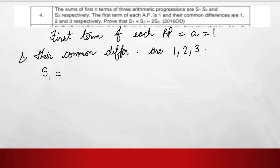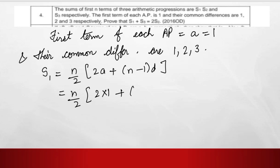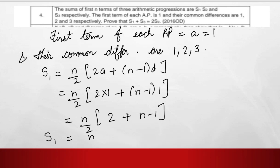Here we write S1 equals n upon 2 times (2A plus n minus 1 into D). In place of A we put 1, and in place of D we put 1. So we get n upon 2 times (2 plus n minus 1), which simplifies to n upon 2 into (1 plus n), giving us n upon 2 plus n squared upon 2.